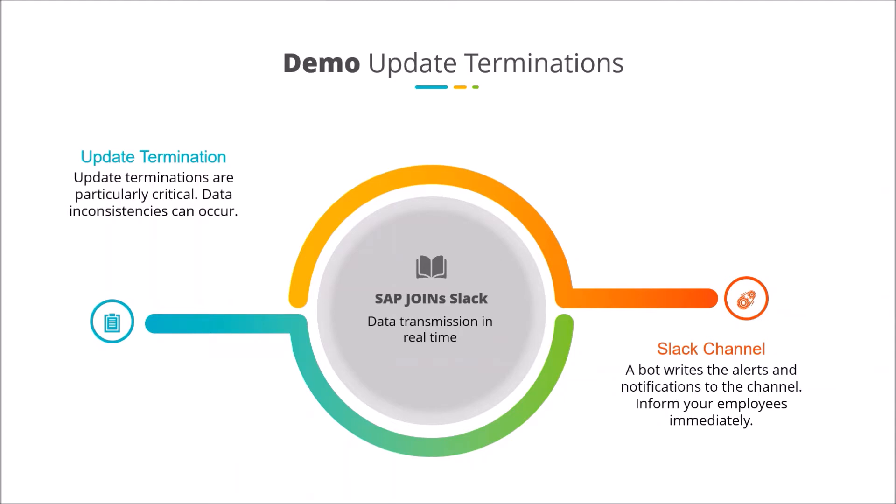The update termination is a particularly critical error. It is possible that inconsistencies may occur in your database, so this should always be checked by an employee. Using real-time data transfer, the information about the error is automatically written to a channel by a bot, and your employees are informed about the incident in a timely manner.